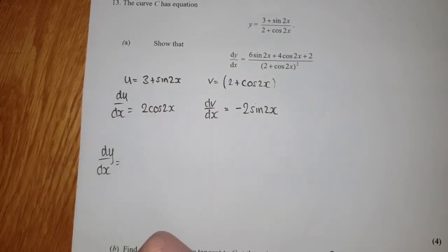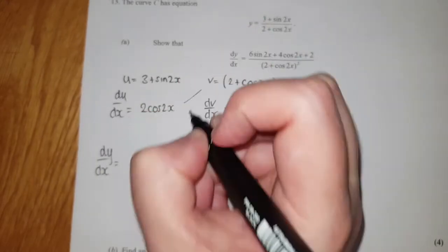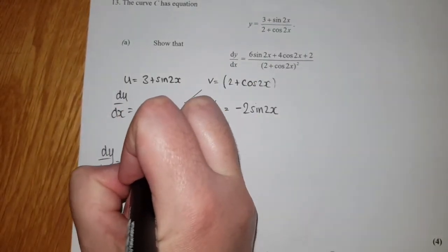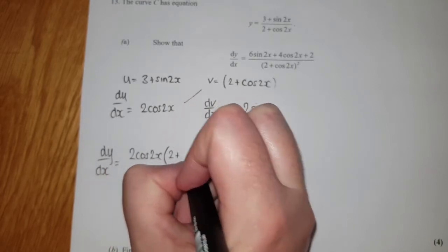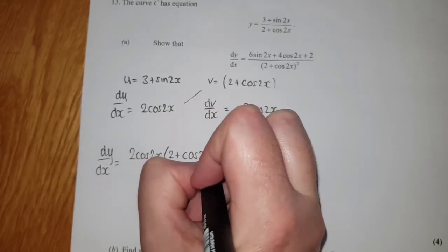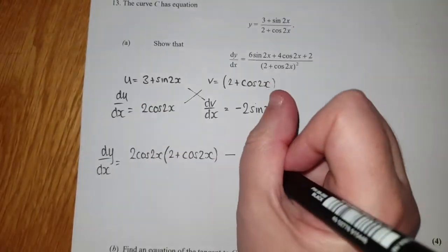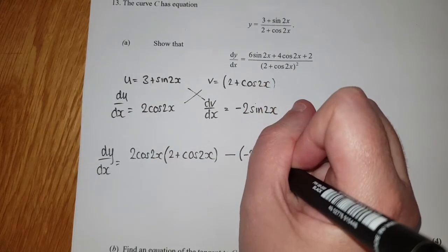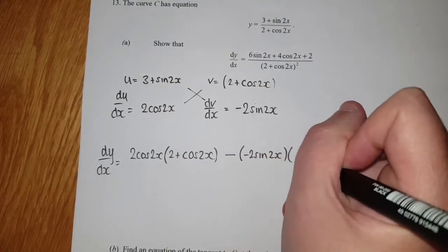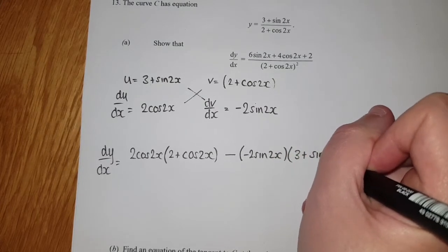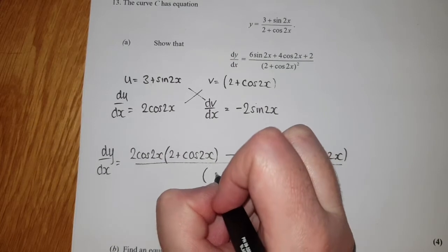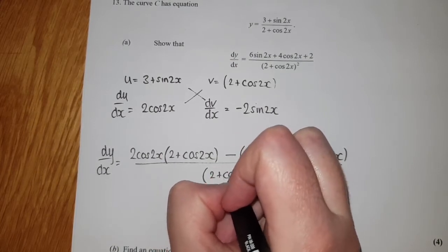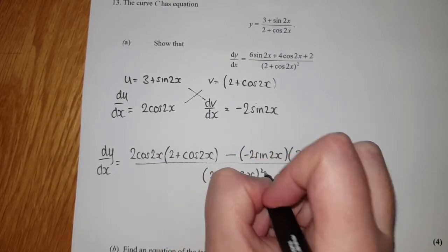We're going to do our dy/dx. So v(du/dx): I get 2cos(2x) times (2 + cos(2x)) minus u(dv/dx), so I get minus 2sin(2x) times (3 + sin(2x)) all over v squared, which in our case is (2 + cos(2x)) squared. You can see that bottom bit isn't going to change from what you want. We just want to tidy up the top.